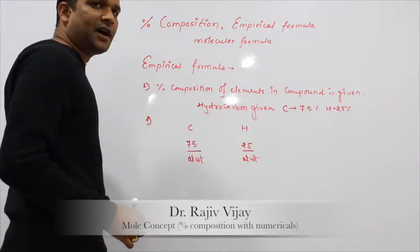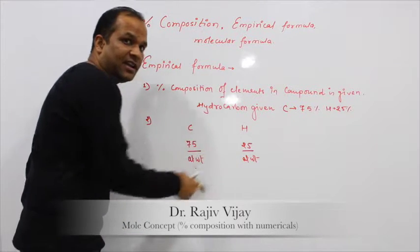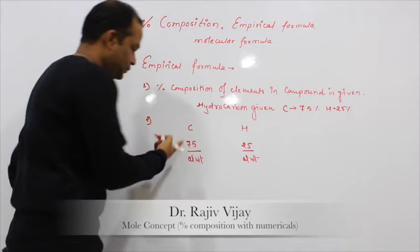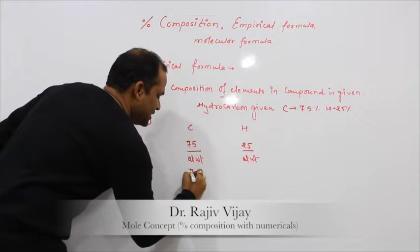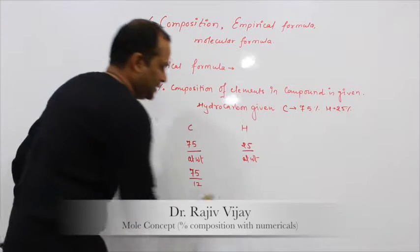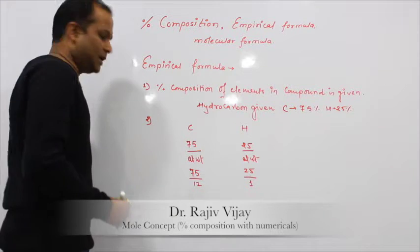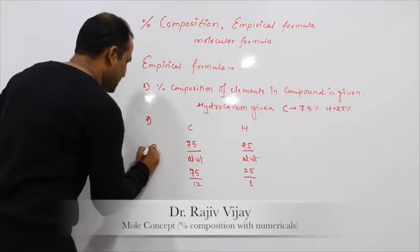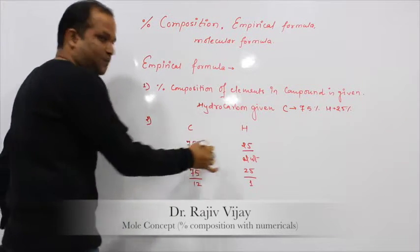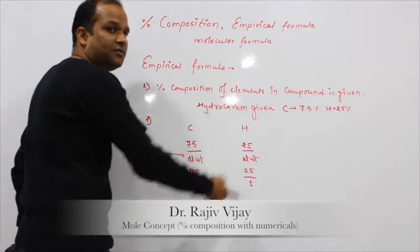What is the atomic weight of carbon? Remember atomic weight. For hydrogen, the atomic weight is 1 and molecular weight is 2. So here it is 75 divided by 12, and 25 divided by 1. So divide the given percentage by atomic weight.